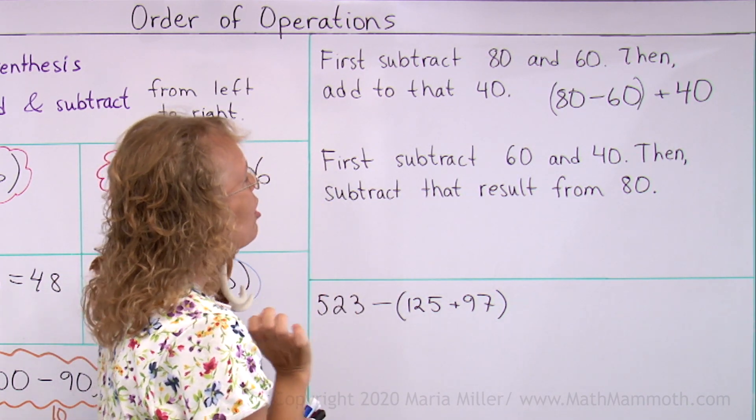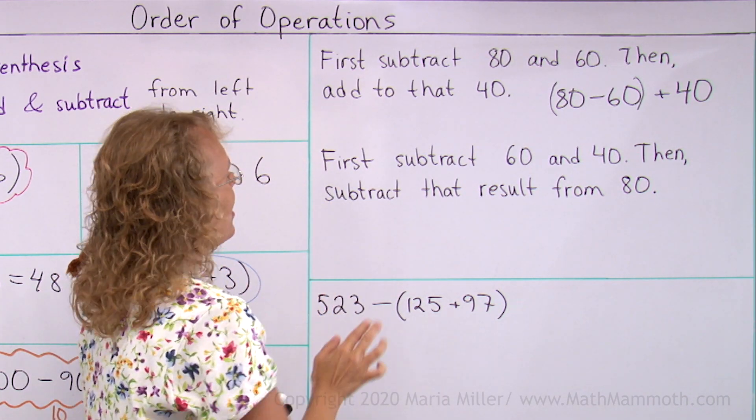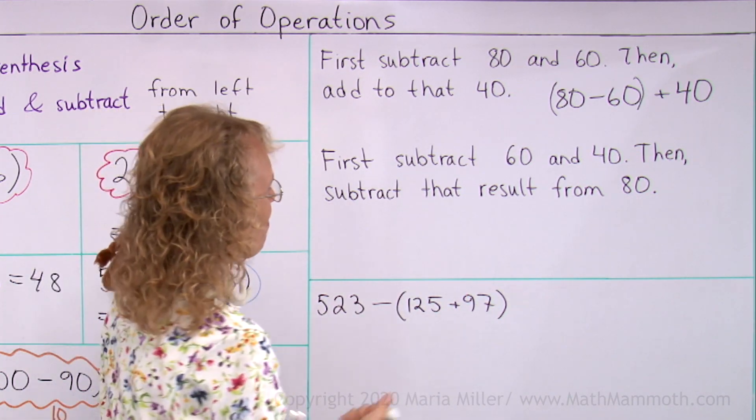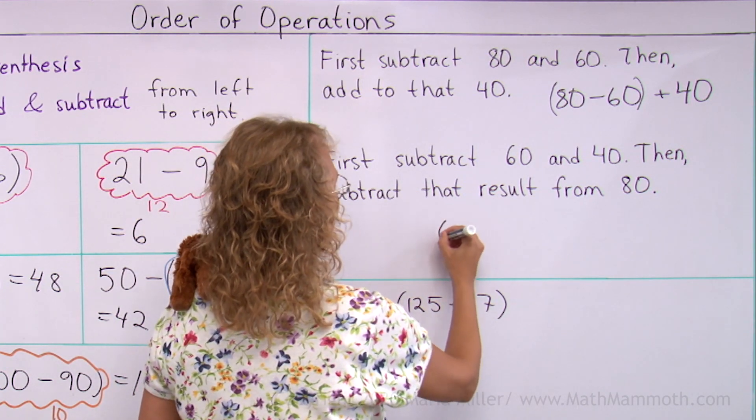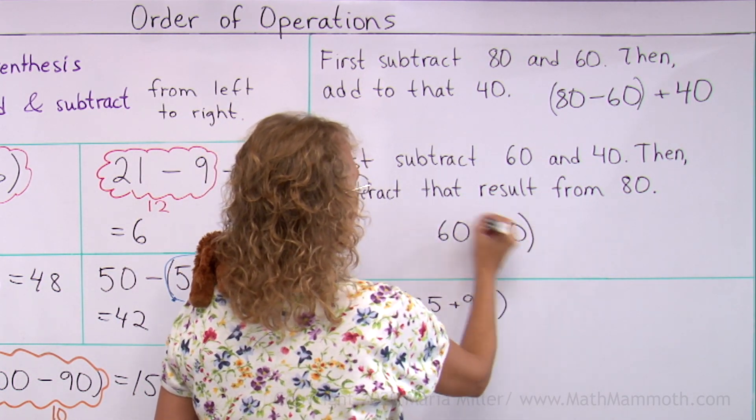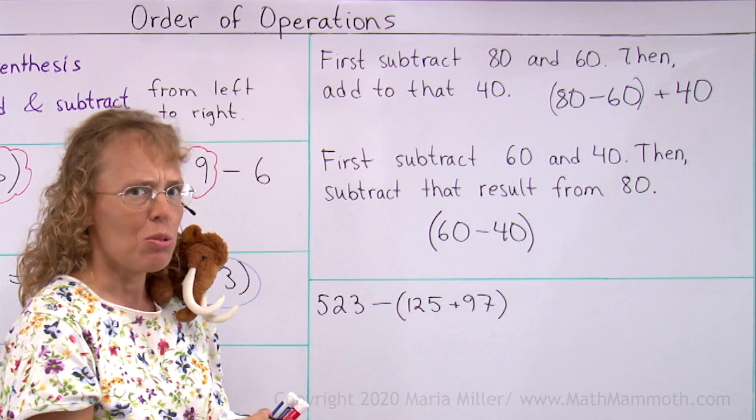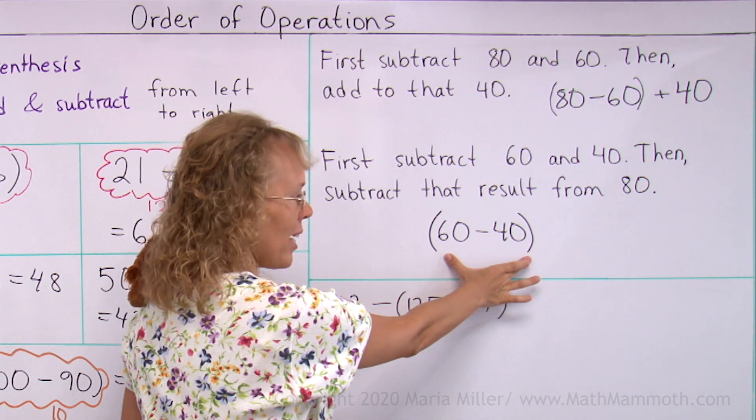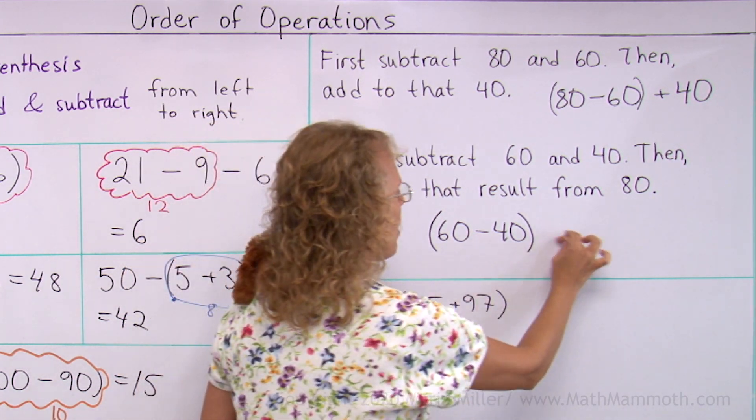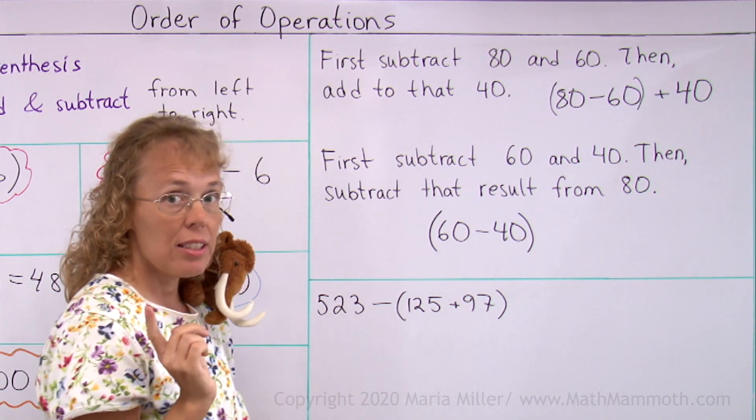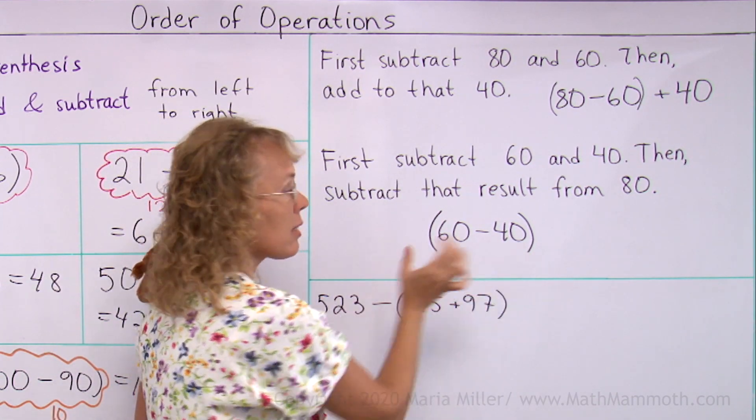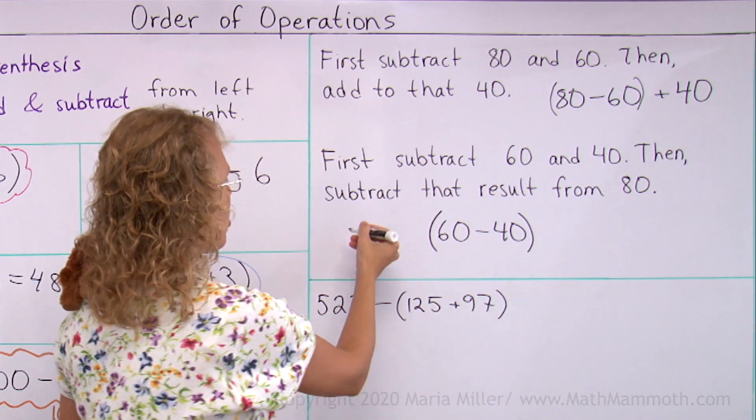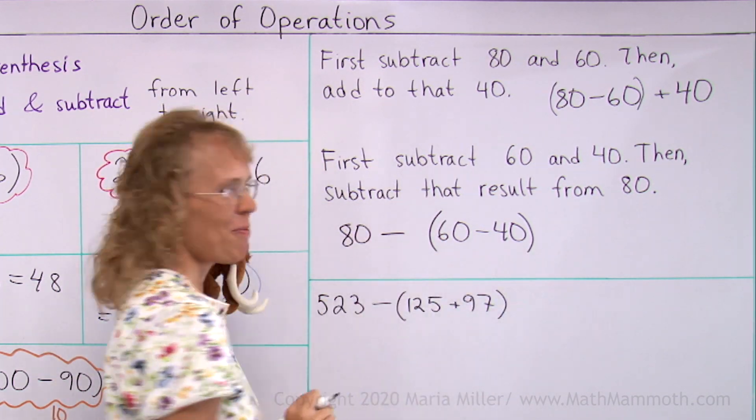First, subtract 60 and 40. And then subtract that result from 80. Now, this is going to be a little different. First, subtract 60 minus 40. Let me put that in parentheses because it says to do that first. And then subtract this thing from 80. Does that mean this minus 80? Or does it mean 80 minus this? We need to take away this from 80, so it must be 80 minus that thing.